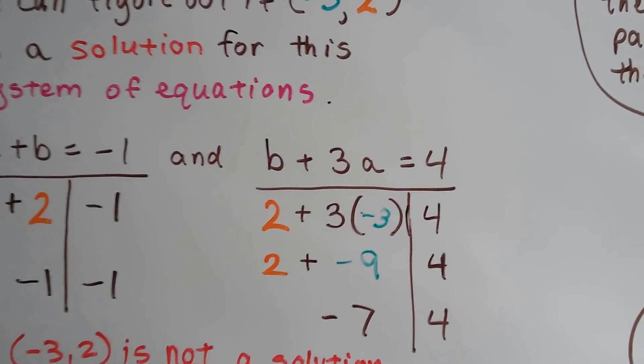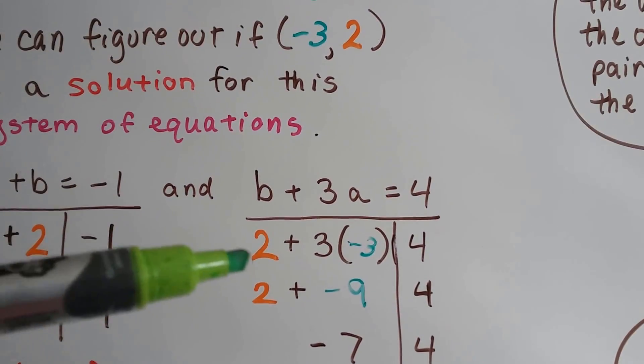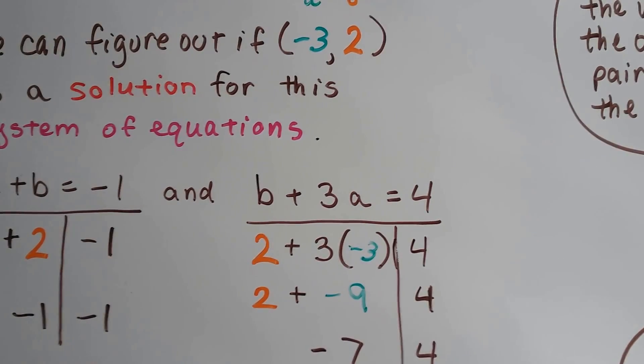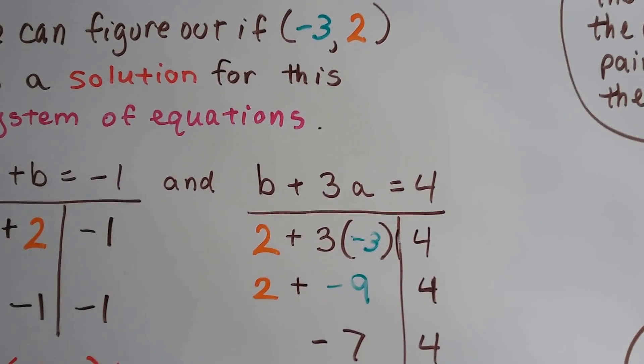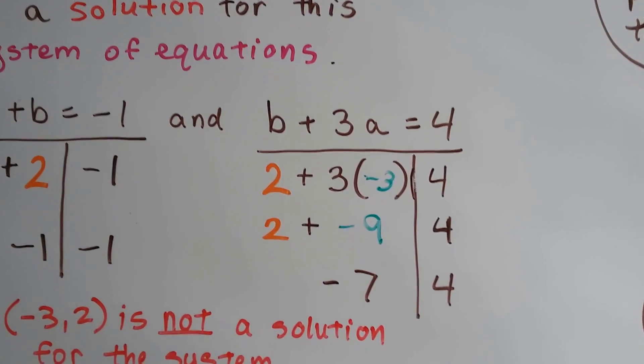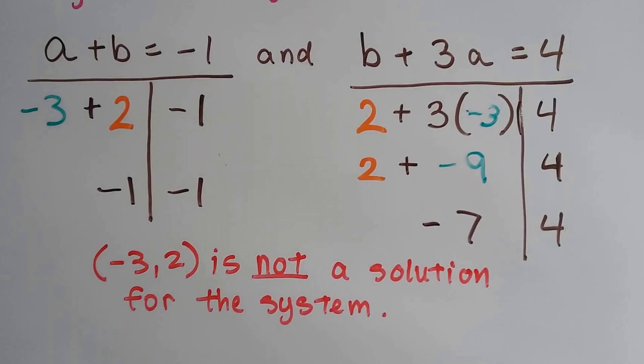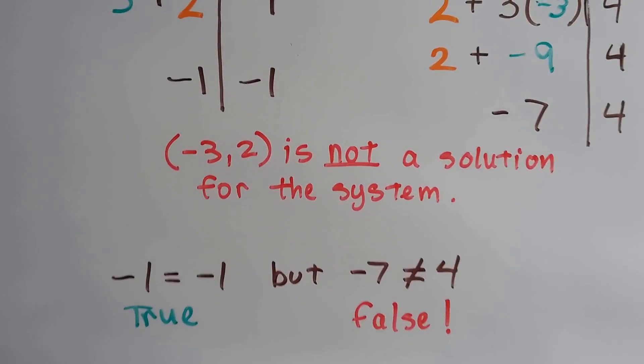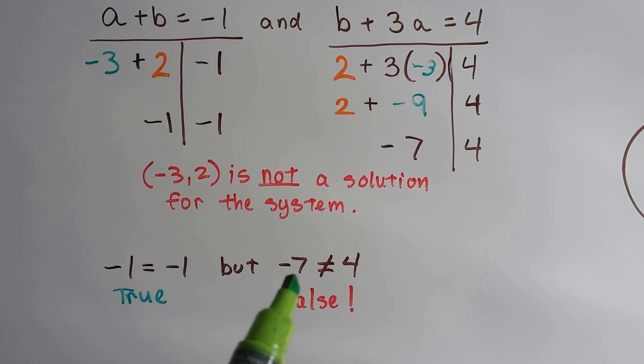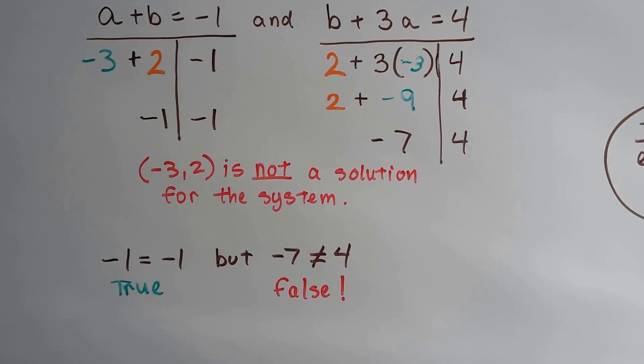On this side, we plug in the negative 3, 2 as a and b, and b is 2, so we've got 2 plus 3 times a negative 3. Well, 3 times negative 3 is negative 9, and 2 plus negative 9 is a negative 7. That's not equal to 4. So it's not a solution for the system. The negative 1 equals negative 1 is true, but this negative 7 does not equal 4. That's false.